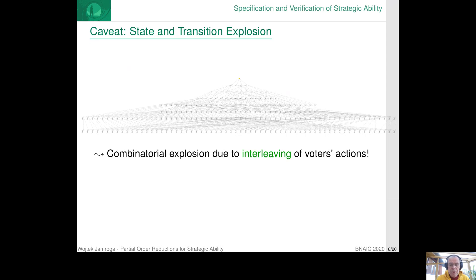Now, one of the sources of this complexity is the combinatorial explosion of the space of states and transitions due to the interleaving of the voters' actions. So if we have K voters, and each of them can enter the polling station, fill in the ballot, cast the ballot, and so on, these actions from different voters can appear in the model in any arbitrary ordering.